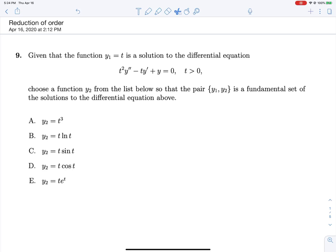Reduction of order is the next topic I'm going to be going through. Our equation for this will be y2 equals y1 times the integral of e to the negative integral of p of t dt all over y1 squared.